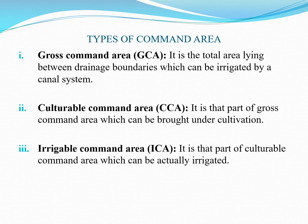The second type is culturable command area. This is that part of gross command area which can be brought under cultivation. It is always less than the gross command area because approximately 30% of land is generally used for roads, mines, streams, habitations, etc. Generally, the culturable command area is taken as 0.8 times the gross command area if a detailed survey is not available.